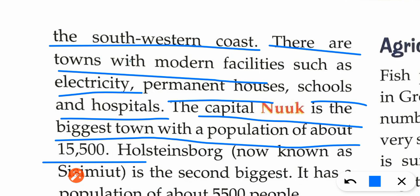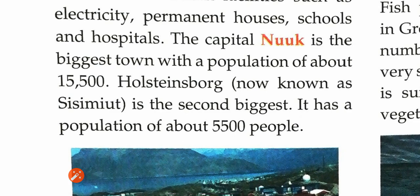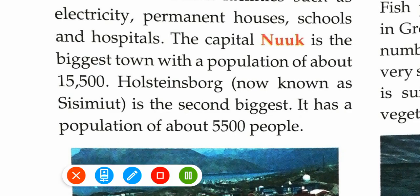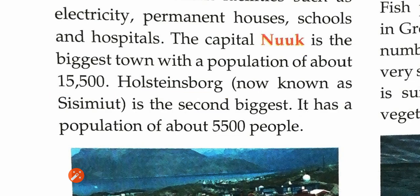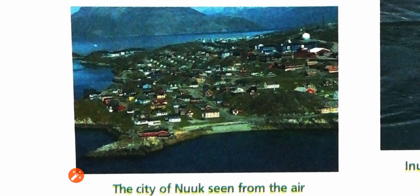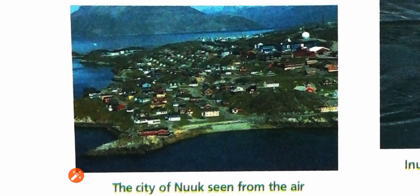Holsteinborg is the second biggest city, with a population of 5,500. So to remember: Nuuk is the first city with population 15,500, and Holsteinborg is the second largest with population 5,500. Nuuk looks very beautiful when seen from the top.